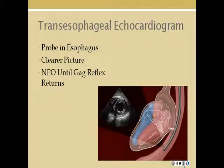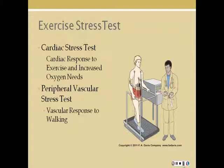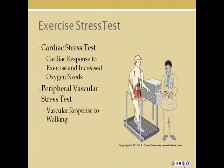The transesophageal echocardiogram provides a clearer picture because lung and rib tissue does not obstruct the sound waves. The patient should be NPO for about six hours before the test and remain NPO until their gag reflex returns. Exercise stress tests look at cardiac response to exercise and increased oxygen needs. Peripheral vascular stress tests look at vascular response to walking, examining circulation to the lower extremities; if intermittent claudication occurs, they would stop the test.